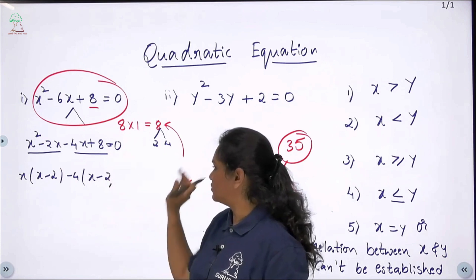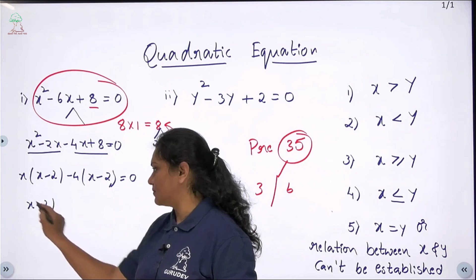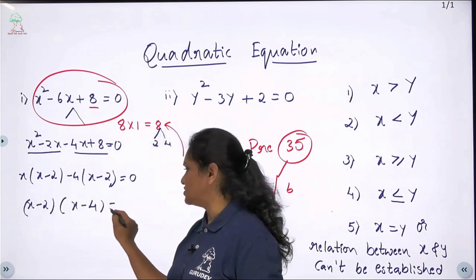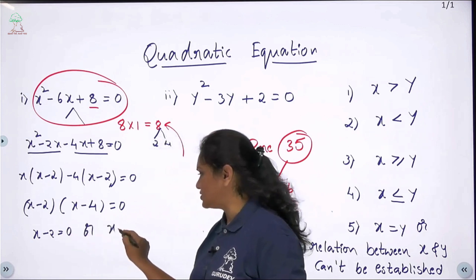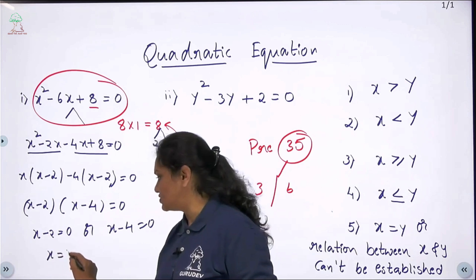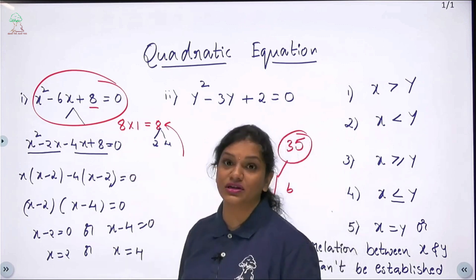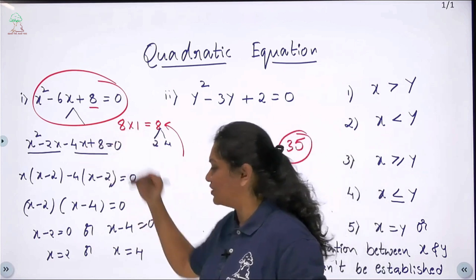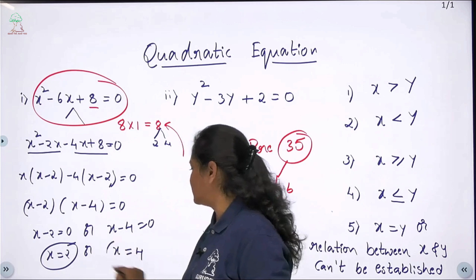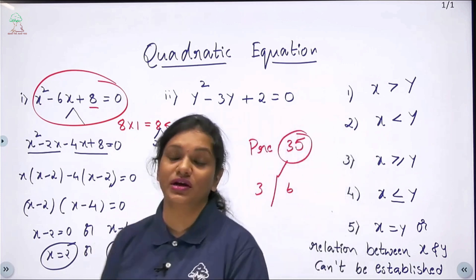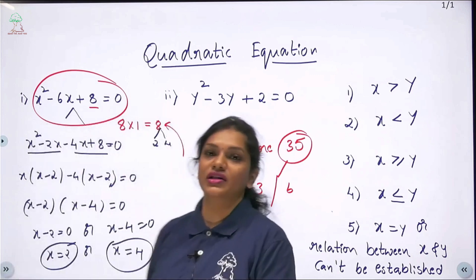Now (x − 2) is common, so we have (x − 2)(x − 4) = 0. Simplifying: x − 2 = 0 or x − 4 = 0, which gives x = 2 or x = 4. We got the roots using the traditional factorization method, but as you can see, it takes more time.